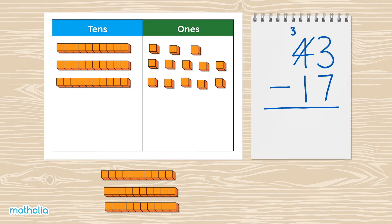have three tens and thirteen ones. Now we have enough ones to subtract seven: one, two, three, four, five, six, seven. How many one blocks are left? There are six ones remaining. Write six in the ones column. Now we